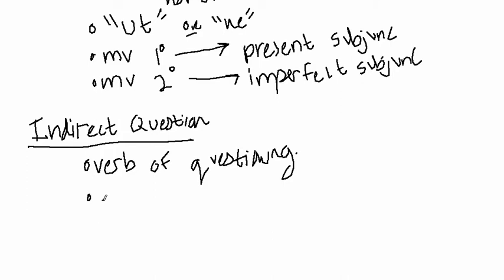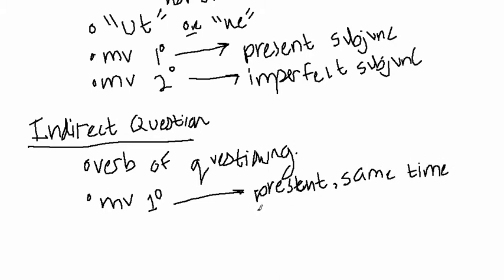Let me go ahead and give you the sequence of tenses. So if the main verb is in the primary sequence, then you use the present if the verb in the indirect question is happening at the same time as the main verb.